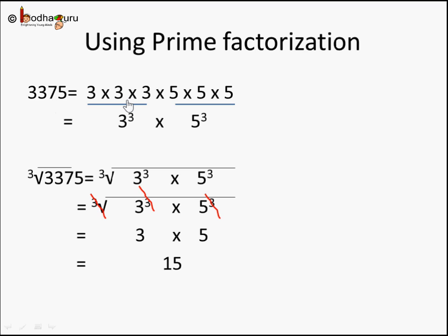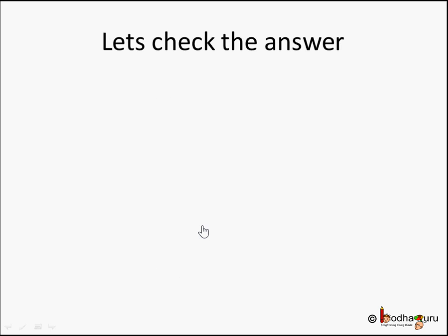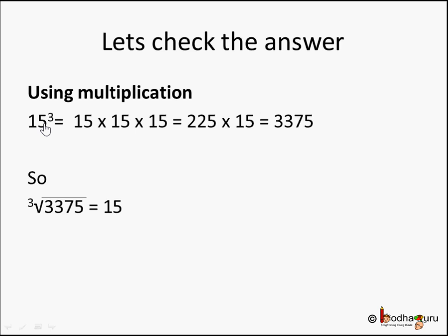We used the prime factorization method, expressed the products as cubes, then cancelled each cube with the cube root, and were left with the individual numbers. 3 into 5 gives us 15. So the cube root of 3375 is 15. Let's verify: cube root and cubing are reverse operations. 15 cubed is 15 into 15 into 15. 15 into 15 is 225, and 225 into 15 is 3375. The answer is correct — cube root of 3375 is 15.